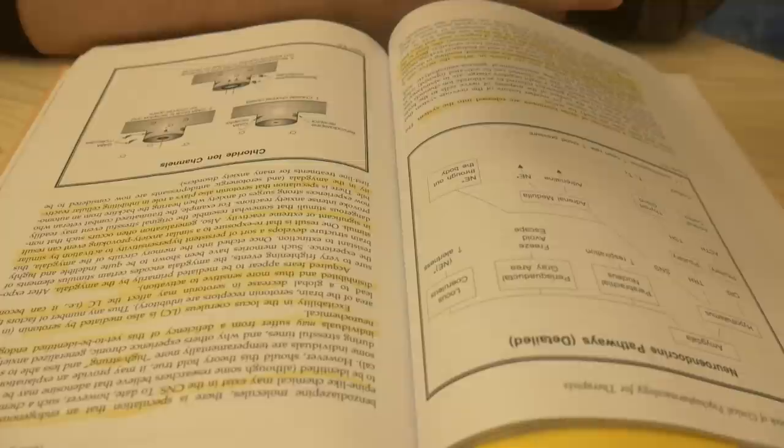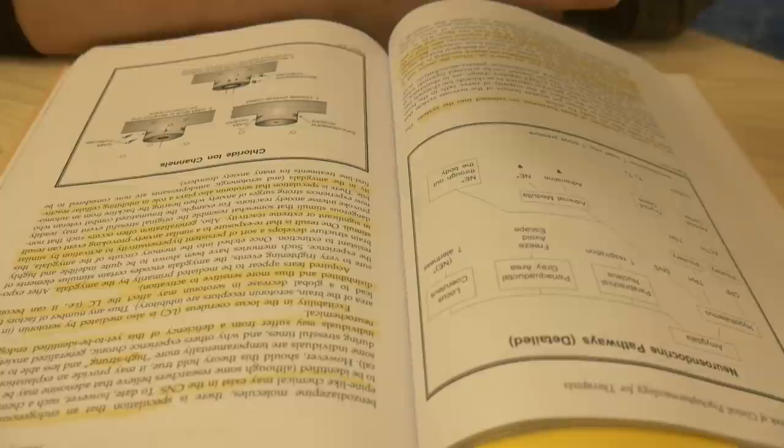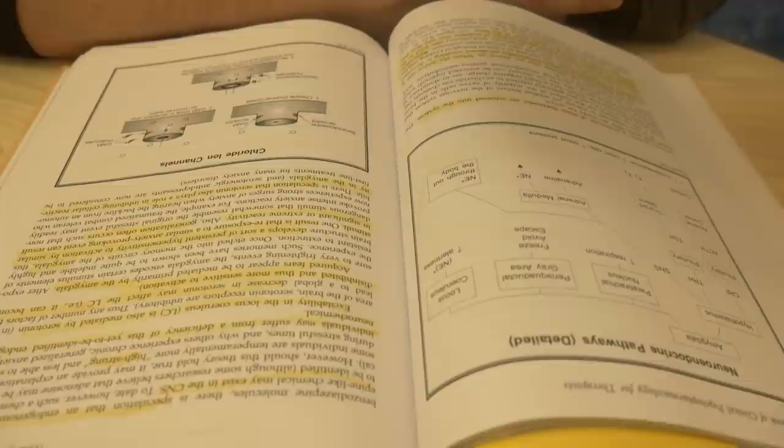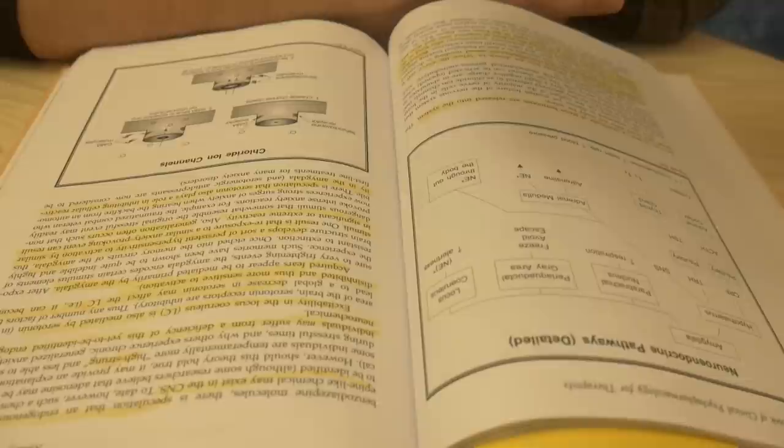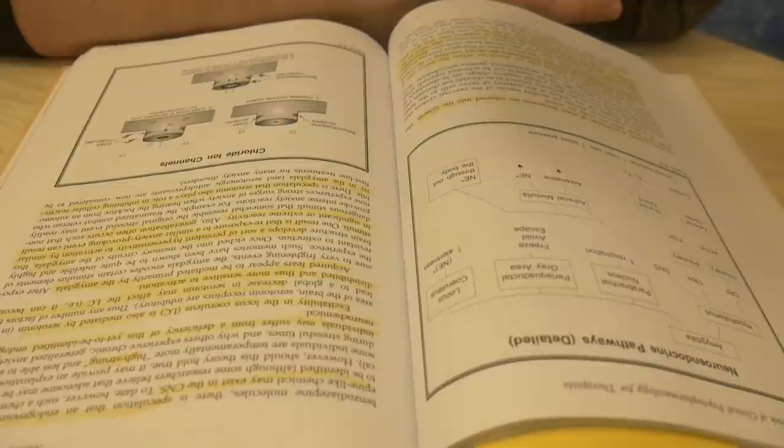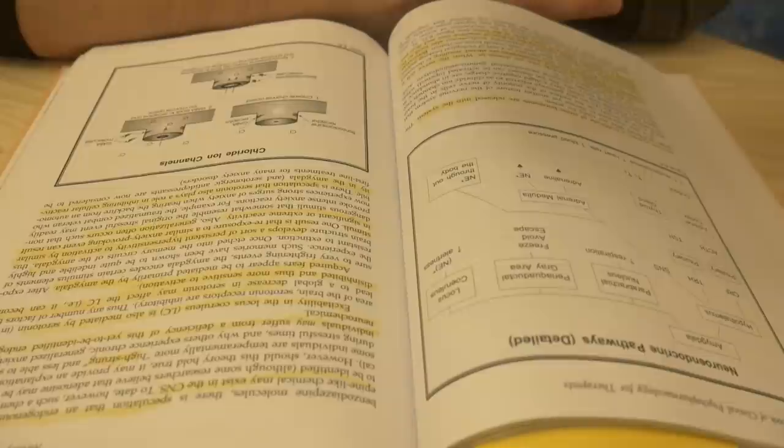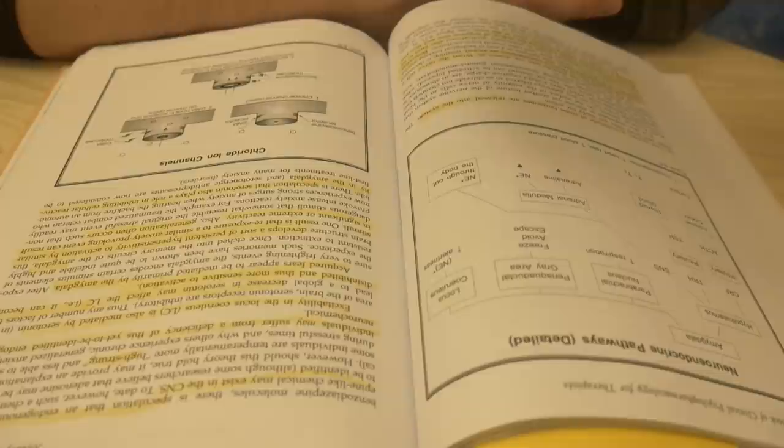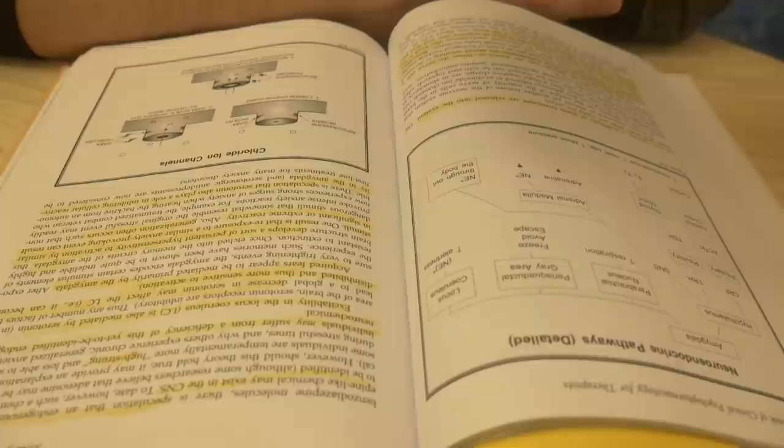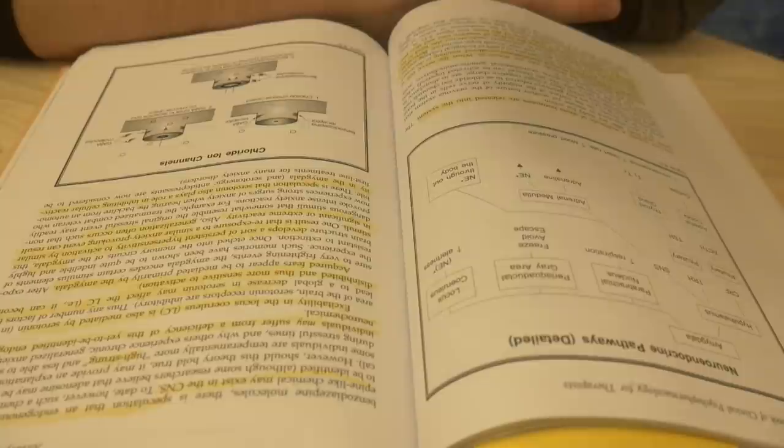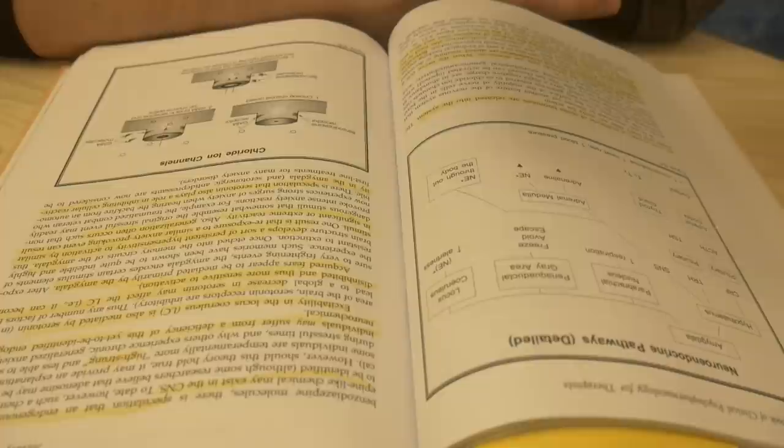This model provides an understanding of the mechanism of action of anti-anxiety medications. It has also led to a theory that may explain some anxiety disorders. Since there is a receptor on the chloride ion channel that responds to benzodiazepine molecules, there is speculation that an endogenous benzodiazepine-like chemical may exist in the central nervous system. To date, however, such a chemical has yet to be identified, although some researchers believe that adenosine may be the chemical. However, should this theory hold true, it may provide an explanation for why some individuals are temperamentally more high-strung and less able to stay calm during stressful times, and why others experience chronic generalized anxiety. Such individuals may suffer from a deficiency of this yet-to-be-identified endogenous neurochemical.